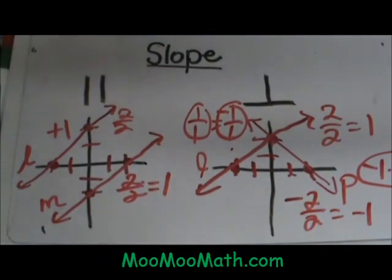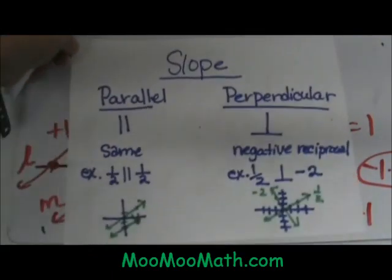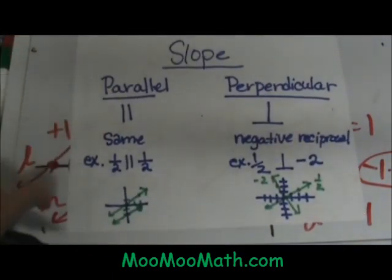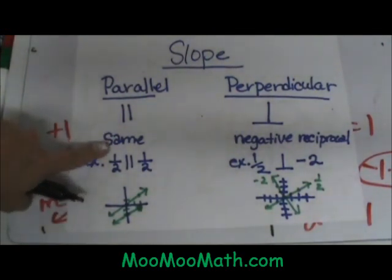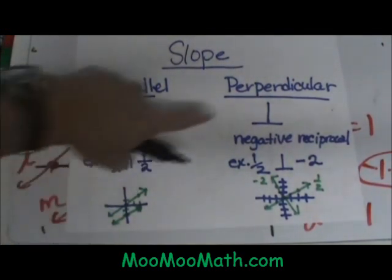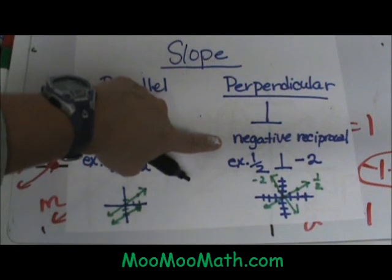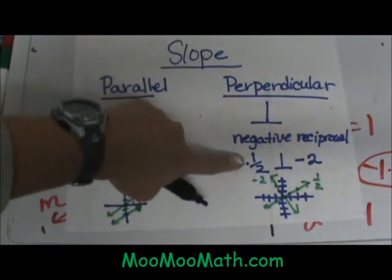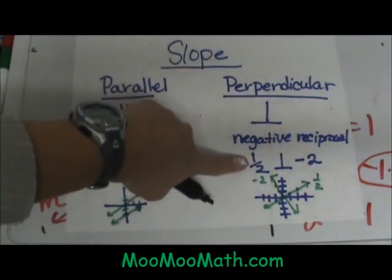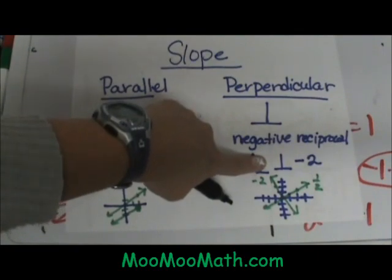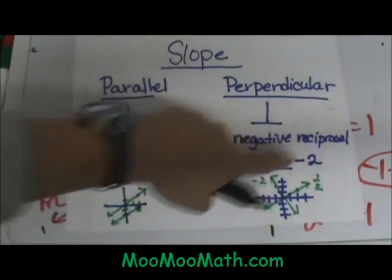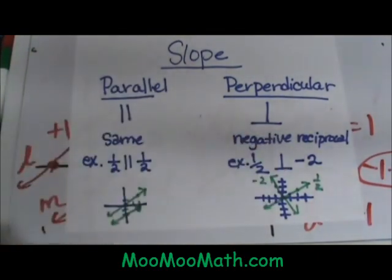Here is an overview of all the different types of slopes. You have parallel lines. They have the same slope, two lines that never intersect. And then you have perpendicular. The slopes are negative reciprocals. So if you have a slope of 1 half, the slope perpendicular to it would be negative 2 because you flip it and change the sign.